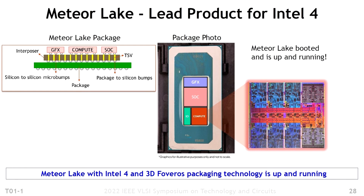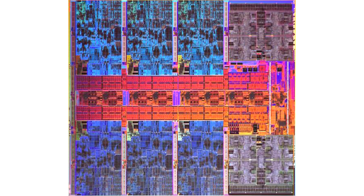Last but not least comes the performance of these new transistors. At ISO power of 0.65 volts, Intel reports a 21.5% gain in sustainable frequency with Intel 4 compared to Intel 7. At higher power like 0.84 volts, the curve flattens to about 10% improvement. For ISO frequency tests, the company reports 40% lower power consumption measured at 2.1 GHz transistor switching speed.